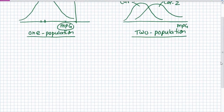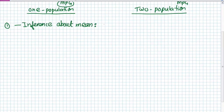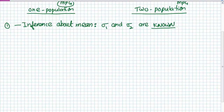Let me first write down formulas for the three different situations we have been discussing in earlier chapters. The first one is inference about the mean when sigma 1 and sigma 2 are known — that is, when the population standard deviations are known. Sigma 1 is the population standard deviation for the first population and sigma 2 is the population standard deviation for the second population.